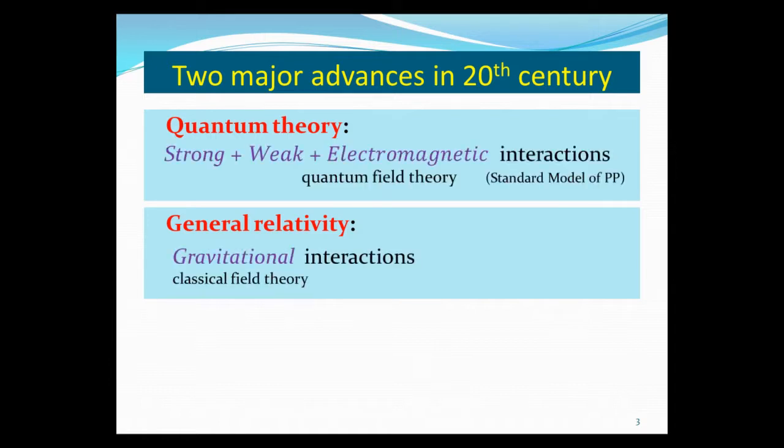Quantum theory, and especially quantum field theory in the form of the standard model of particle physics, can describe strong, weak, and electromagnetic interactions—three of the four basic forces in nature—very well. General relativity is a classical field theory of gravity. It's classical, meaning it does not take the quantum aspect of the force into account. So therefore, not surprisingly, the forefront of theoretical physics now in the 21st century is quantum gravity.